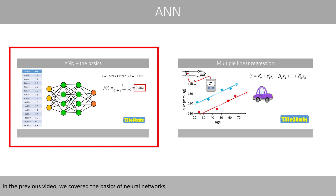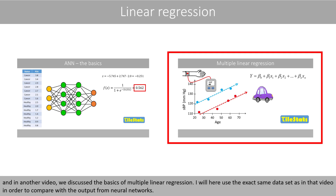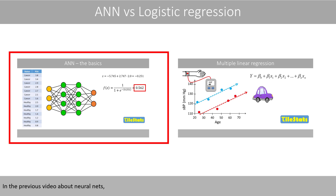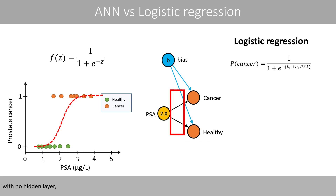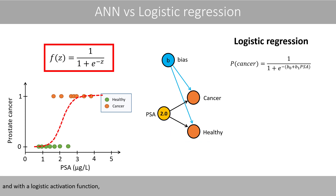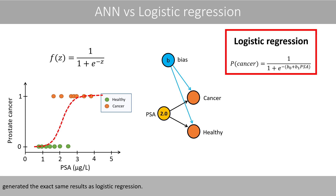In the previous video, we covered the basics of neural networks, and in another video, we discussed the basics of multiple linear regression. I will use the exact same dataset in order to compare with the output from neural networks. We saw that a network with a binary outcome, with no hidden layer, and with a logistic activation function, generated the exact same results as logistic regression.